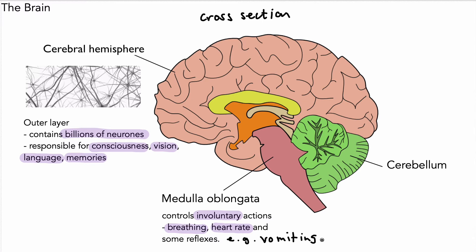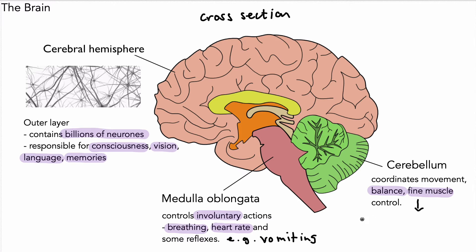Next is the cerebellum — that's the green region there. This coordinates movement, balance to keep you upright, and fine muscle control. An example of fine muscle control would be tying shoelaces, writing, or things like that where small muscles work together to achieve a task.